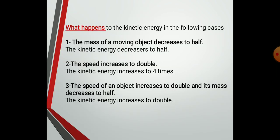What happens to the kinetic energy in the following cases? Number one: the mass of a moving object decreases to half — the kinetic energy decreases to half. Number two: the speed increases to double — the kinetic energy increases to four times. Number three: the speed of an object increases to double and its mass decreases to half — the kinetic energy increases to double.